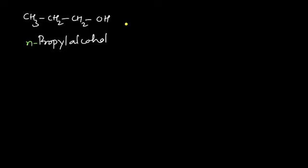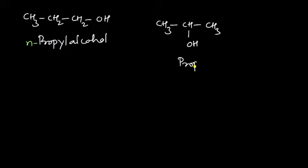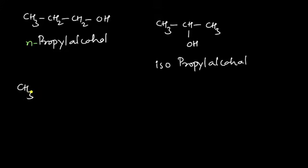Another example: CH₃CH(OH)CH₃ — this is also a propyl alcohol, but the difference is that the OH group is attached to the second carbon. Therefore it is termed isopropyl alcohol.